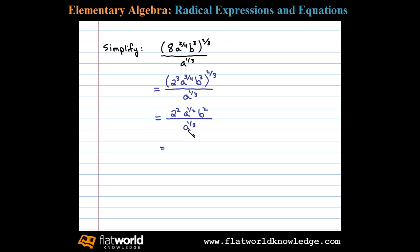We have here the same base a, so we can subtract those exponents. We'll have a to the 1/2 minus 1/3 power times b squared. And then finally, 1/2 minus 1/3 is 1/6, so that leaves us with 4 times a to the 1/6 power times b squared.